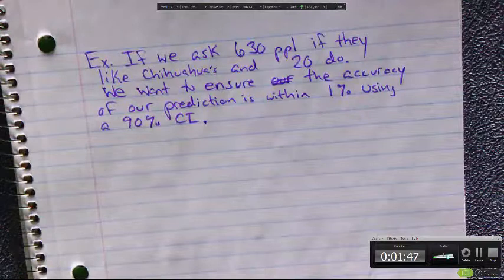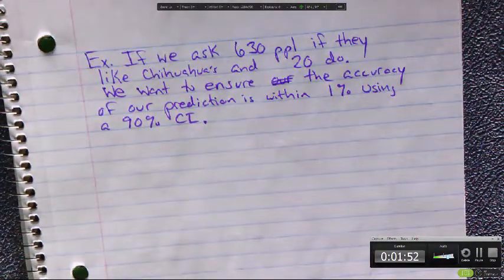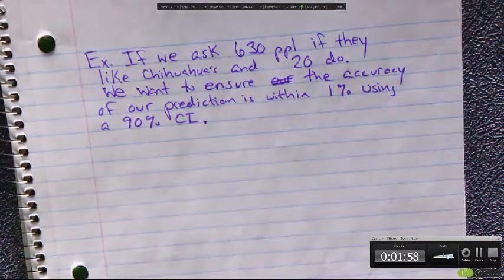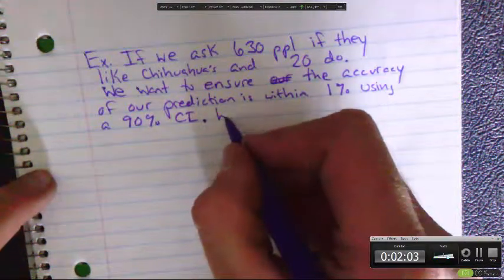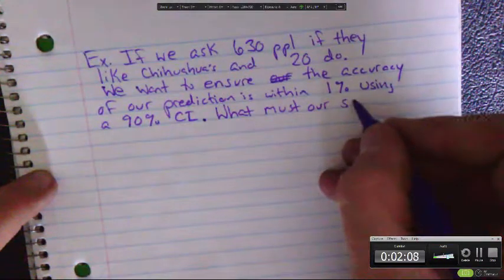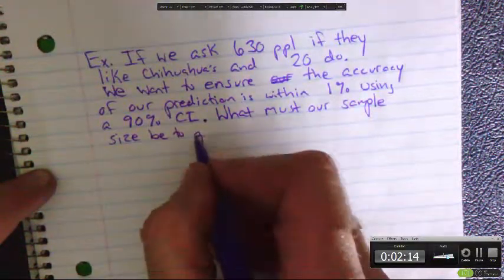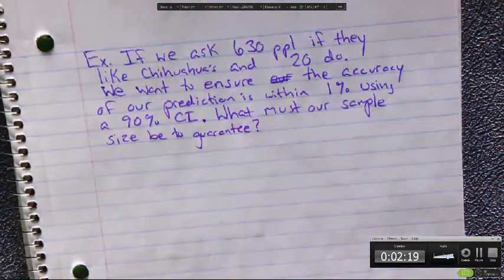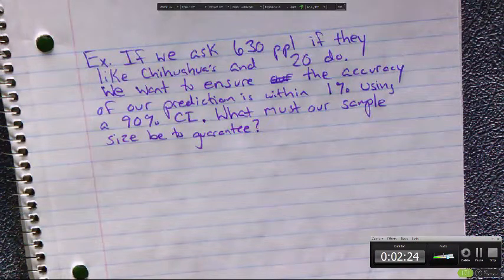We could run through it and find that maybe this is accurate within 1%. We could run through this and figure out that this is accurate within 1%. What must our sample size be to guarantee this? If we want to ensure it, there's a way to calculate it.